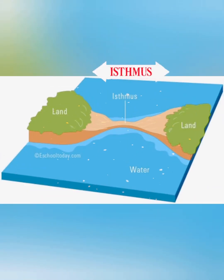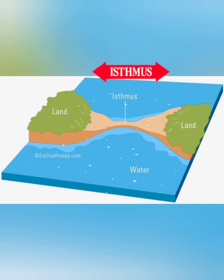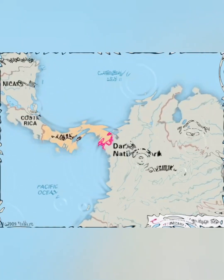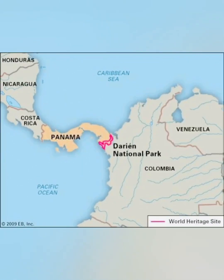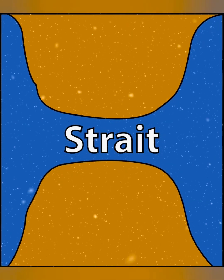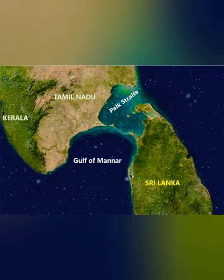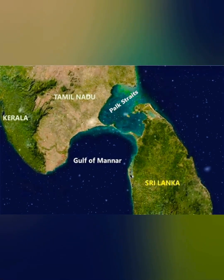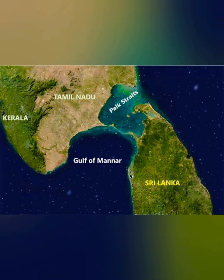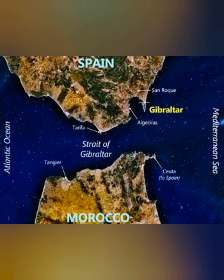An isthmus is a narrow strip of land joining two landmasses. The Isthmus of Panama is one example of this. A strait is a narrow passage of water connecting two large water bodies like seas and oceans. The Strait of Gibraltar is another example of a strait.